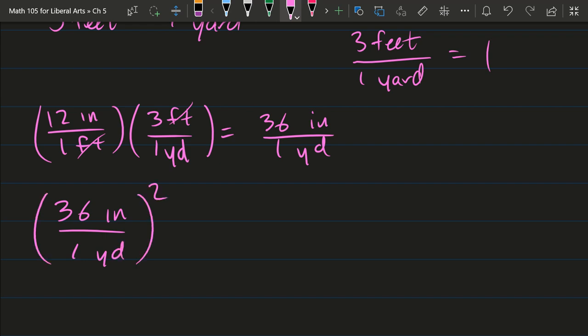The way you square a fraction is you distribute the square to the numerator and to the denominator. So it's 36 squared inches square or square inches divided by one square yard squared. And 36 squared, I probably should have done this ahead of time, it's a big number. I'll square it right now.